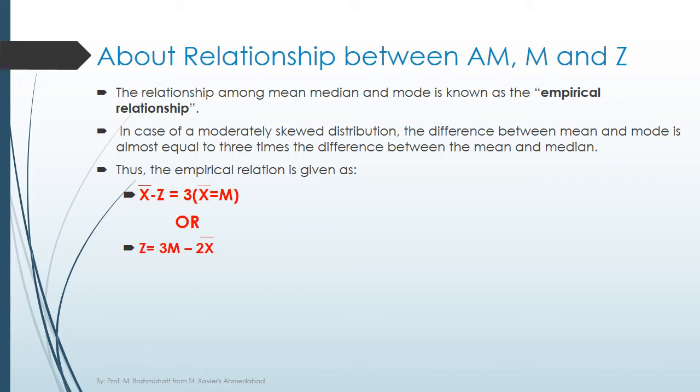In case of a moderately skewed distribution, the difference between mean and mode is almost equal to three times the difference between mean and median.